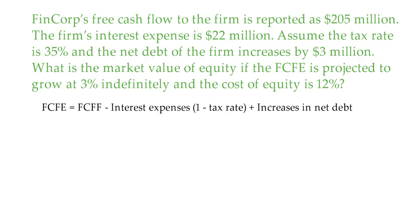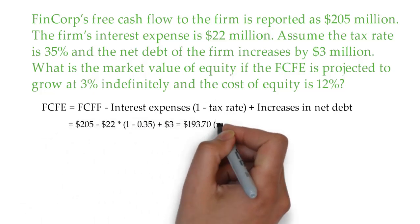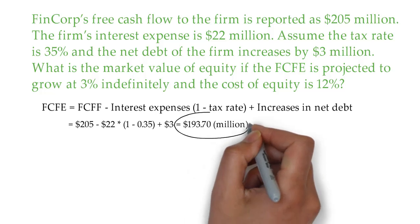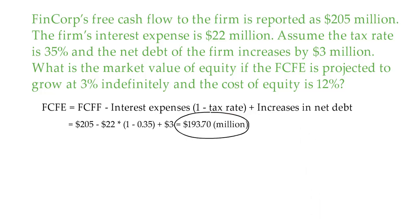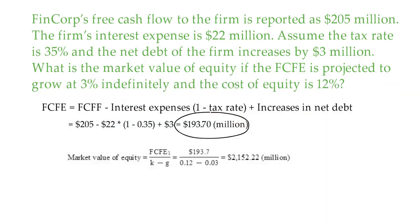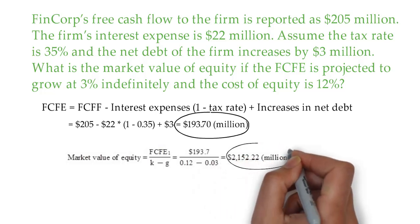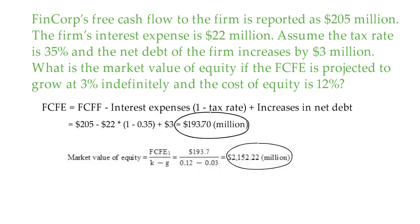Once we plug in the numbers we get the free cash flow to the equity which is $193.70 million, and then using this number we will apply the DCF model. The market value of equity is free cash flow to the equity holder divided by the required rate of return for equity minus the growth rate of FCFE. Once you plug in the numbers you get $2,152.22 million, which shows the market value of equity, or market cap.